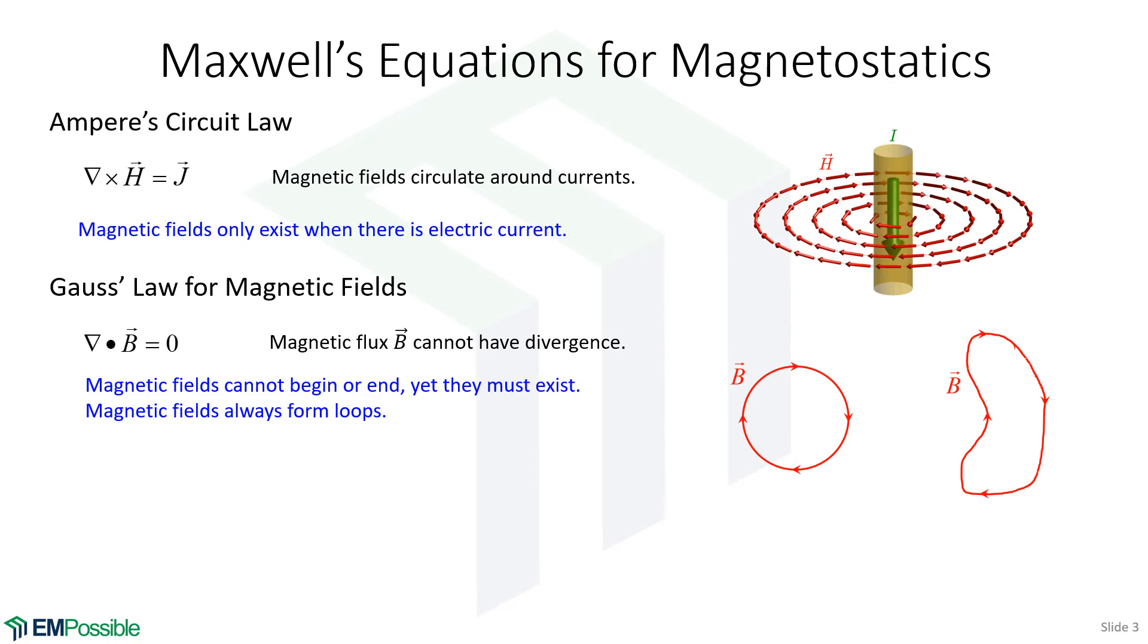Well, if the magnetic flux exists and it can't diverge or converge, meaning you can't have a beginning or an end, but it exists, the only thing for it to do is form loops. And they don't have to be perfect circular loops. They could be other shapes, but they always end where they start so that there really is no beginning or end.